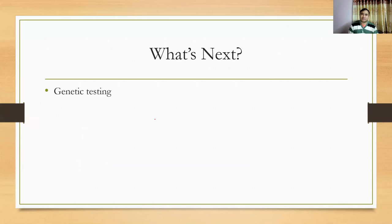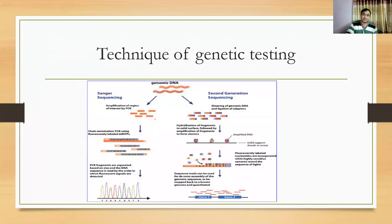With nerve conduction studies, nerve biopsies, and ultrasound, there is still no test that can definitively confirm whether it is CMT or not — for that, you need to do genetic testing. There are two ways of doing genetic testing: Sanger sequencing, which detects specific mutated genes, and next-generation sequencing (NGS), which can detect various and multiple mutated genes simultaneously.